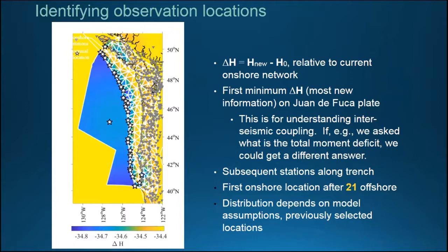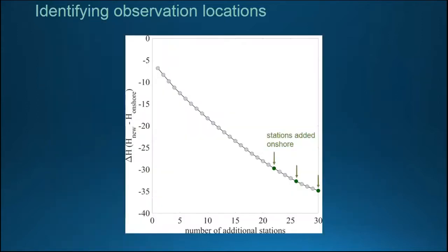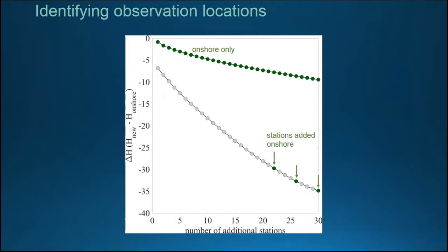The first 21 additional places you'd want to make observations are all offshore. It's not until the 22nd observation that goes onshore. Alternatively, you could ask: how much would I learn if I instead densified my onshore GPS network? It also decreases entropy, but not nearly as much as putting out offshore stations. In fact, it would take 18 additional GPS stations on land to learn as much as you would learn from one offshore measurement.